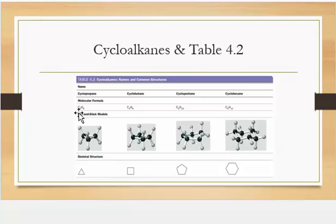Cyclopropane has three carbon atoms and a skeletal structure of a triangle. Cyclobutane has four carbon atoms and a skeletal structure of a square. Cyclopentane has five carbon atoms and a skeletal structure of a pentagon. Cyclohexane has six carbon atoms and a skeletal structure of a hexagon.